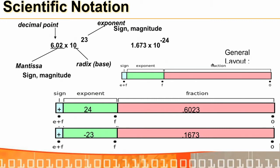Similarly, 1.673 × 10⁻²⁴ can be written as 0.1673 × 10⁻²³ with a plus sign. So there is an exponent, a mantissa or fraction, and a sign bit — this is the basic representation.